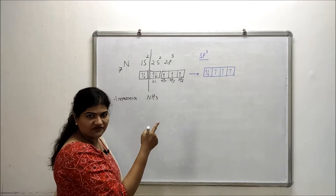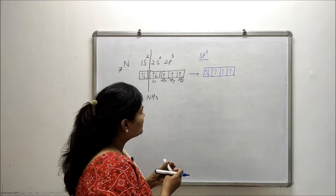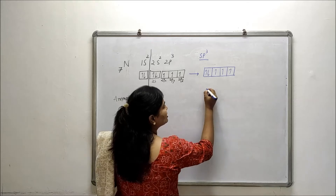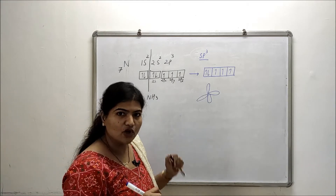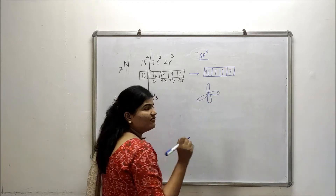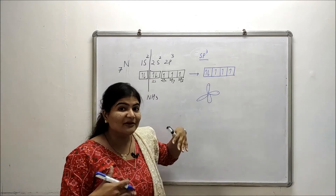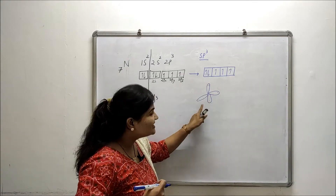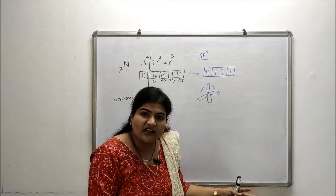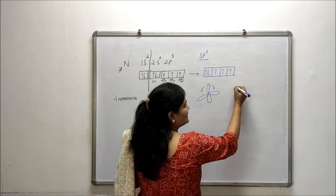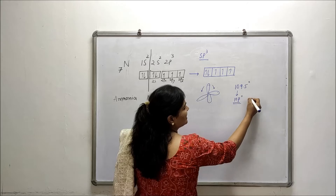The electronic configuration of the hybrid orbitals shows that one orbital is completely filled — that is the lone pair — so it will not participate in bond formation. As there are 4 hybrid orbitals, the geometry is regular tetrahedral, like in methane. But unlike carbon, nitrogen contains a lone pair. Lone pair–bond pair repulsions are greater, making that orbital bulkier and pushing the other three orbitals slightly downward.